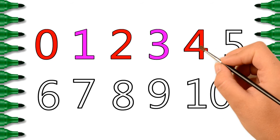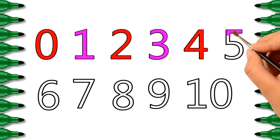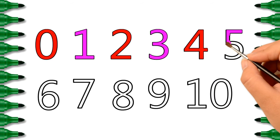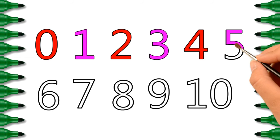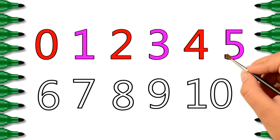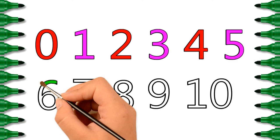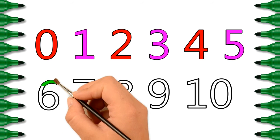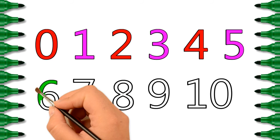One, two, three, four, five, six, seven, eight, nine, ten. One, two, three, splashing in the sea. Four, five, six, naughty little chicks. Seven and nine, swinging on the pine. Here comes number ten and angry mother hen.